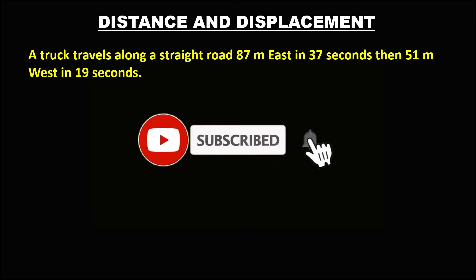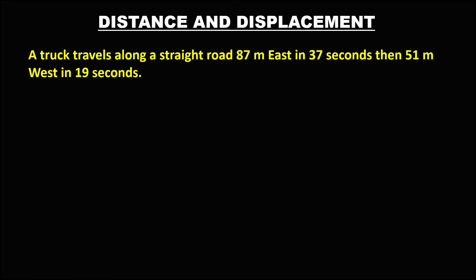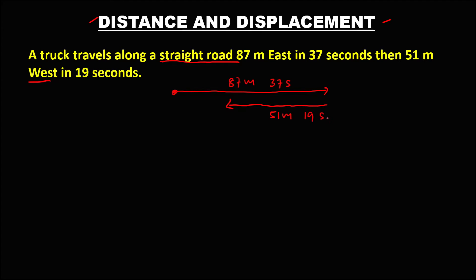Let's have this problem. A truck travels along a straight road — 87 meters to the east in 37 seconds, then 51 meters to the west in 19 seconds. We need to find the distance and the displacement. Since the truck travels in a straight road, this is the starting point, then it travels east — 87 meters in 37 seconds — then back to the west, 51 meters in 19 seconds.